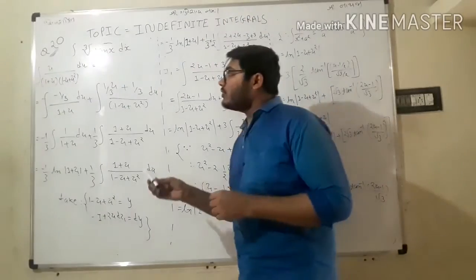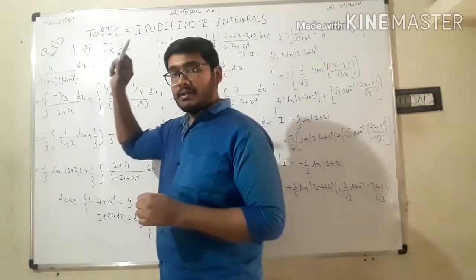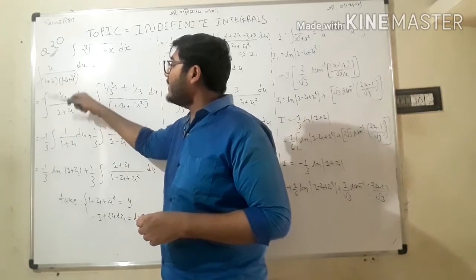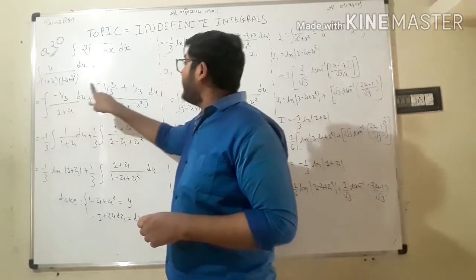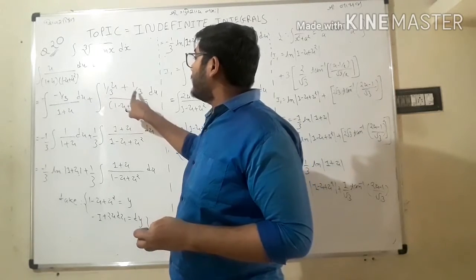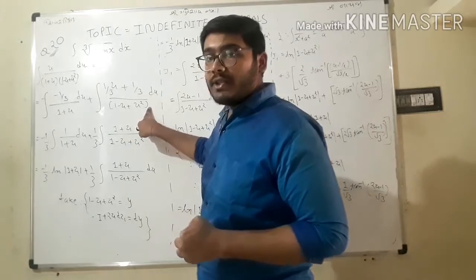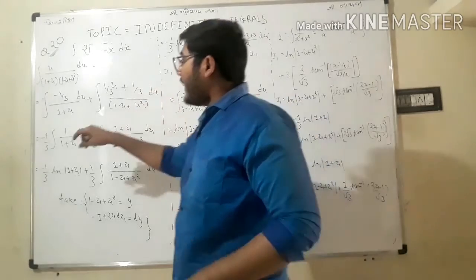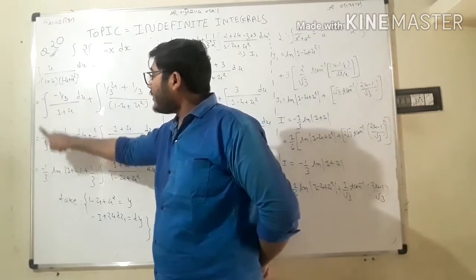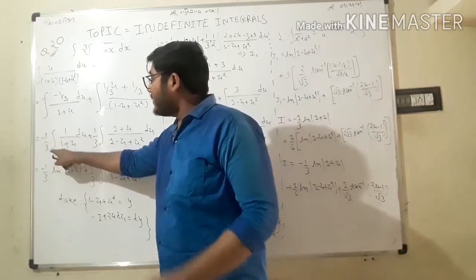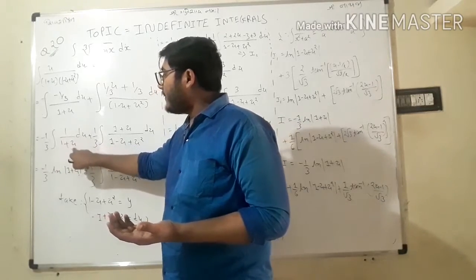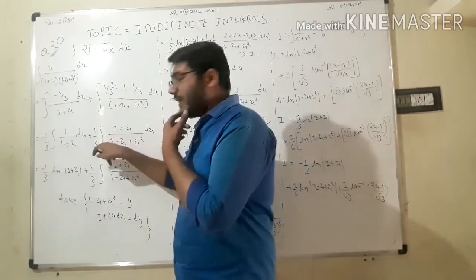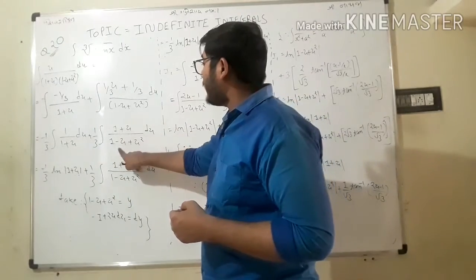We put A, B, C values back. Remembering the equation is the integral of u upon (1+u)(1-u+u²) du, with A = -1/3, B = 1/3, C = 1/3. We get: minus 1/3 integral of 1/(1+u) du plus 1/3 integral of (u+1)/(1-u+u²) du.